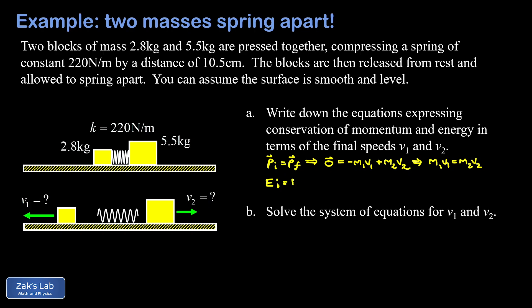We look at energy conservation: E_initial equals E_final. In the initial state, the energy is all stored in the spring, so I can write that as ½kx², where x is the initial compression distance. In the final state, I have two objects moving, each with kinetic energy: ½m1·v1² plus ½m2·v2². We can clear all the fractions by multiplying both sides by two, giving us kx² equals m1·v1² plus m2·v2².